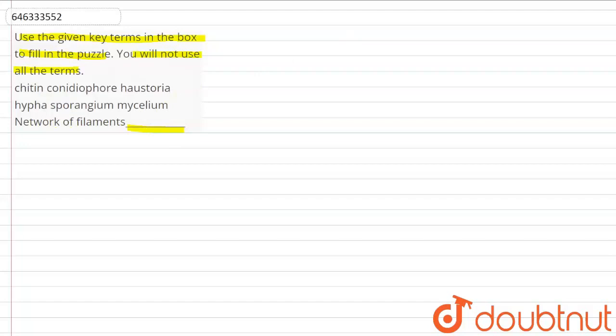If we look at all terms, the first term is chitin. Chitin is the cell wall's main component in fungi. Chitin is a polysaccharide, a complex carbohydrate.